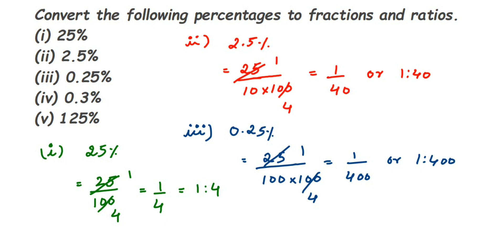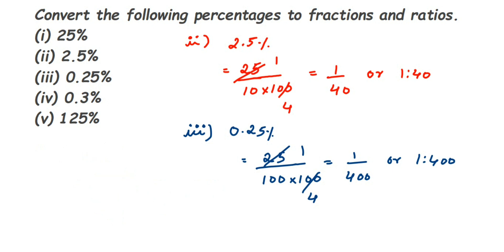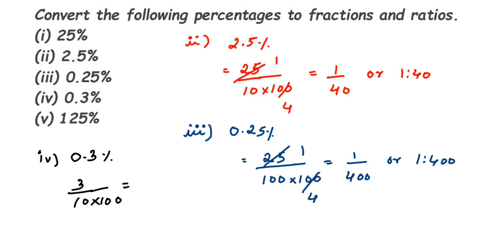The next question is 0.3%. After the decimal there is one digit, so it becomes 3 upon 10. Removing the percentage sign means we divide by 100, so 100 gets multiplied with 10 giving 3 upon 1000. We cannot cancel this further because 3 does not go into 10 or 100. So the fraction is 3 by 1000, and as a ratio it is 3 is to 1000.